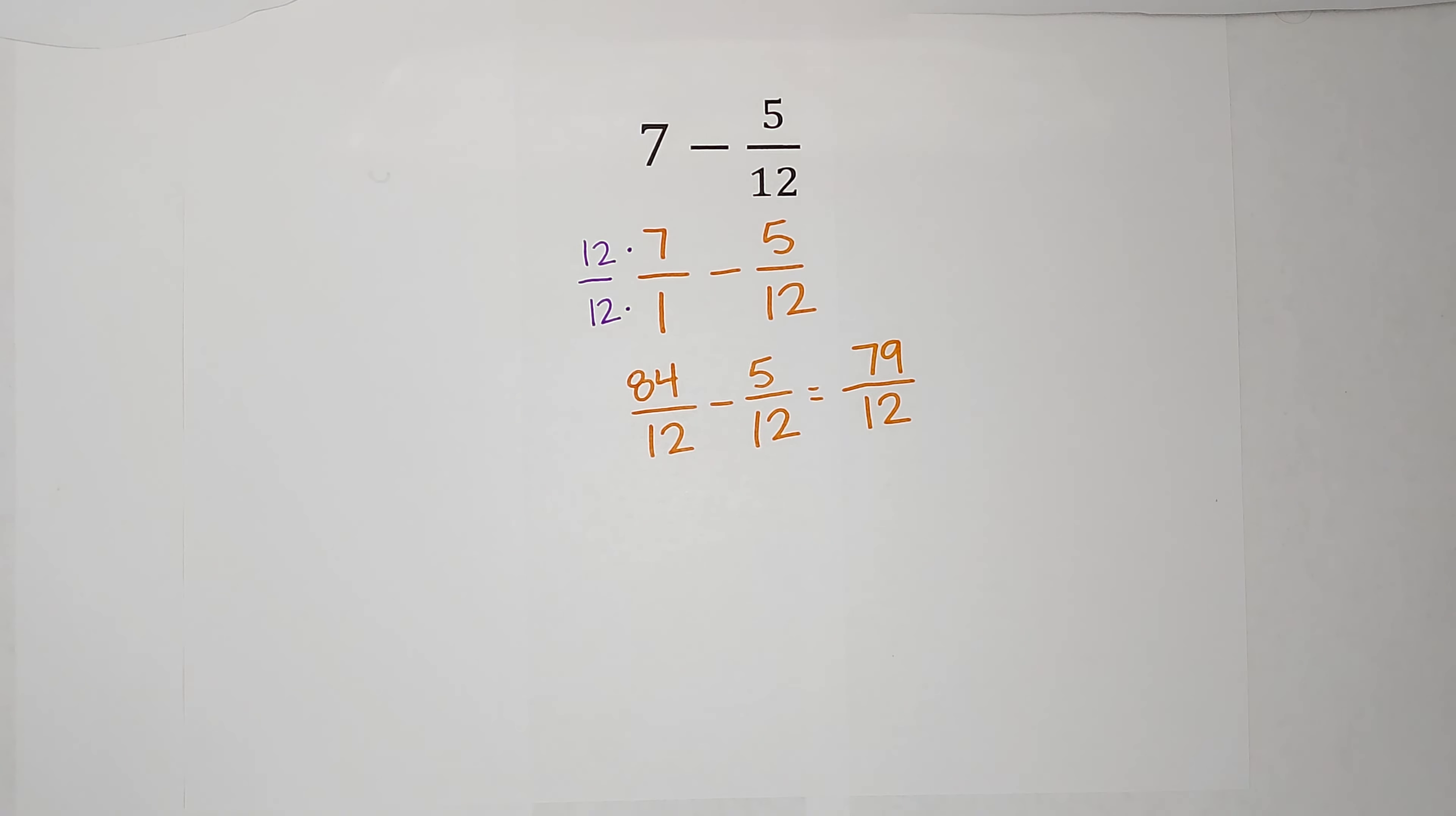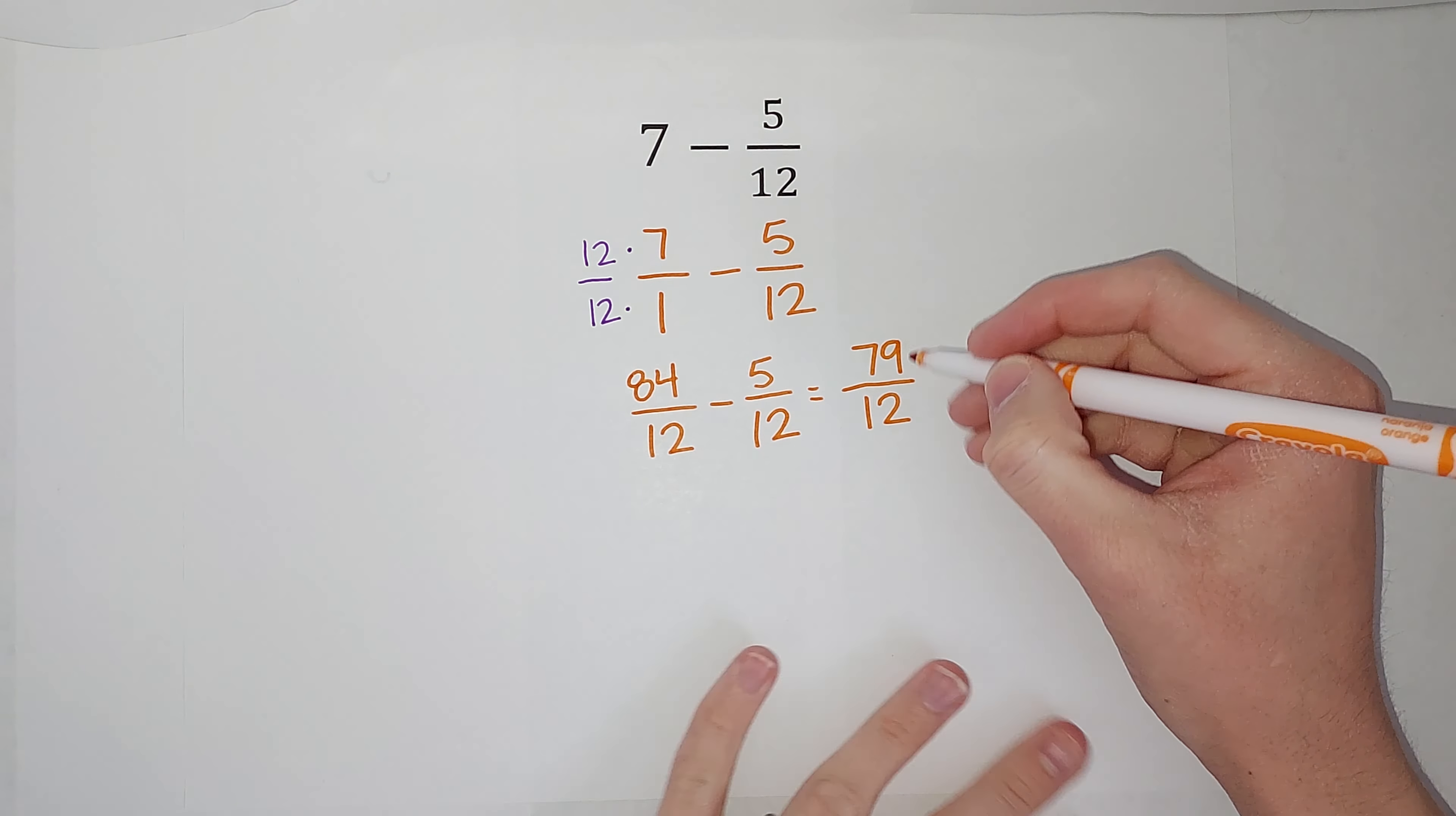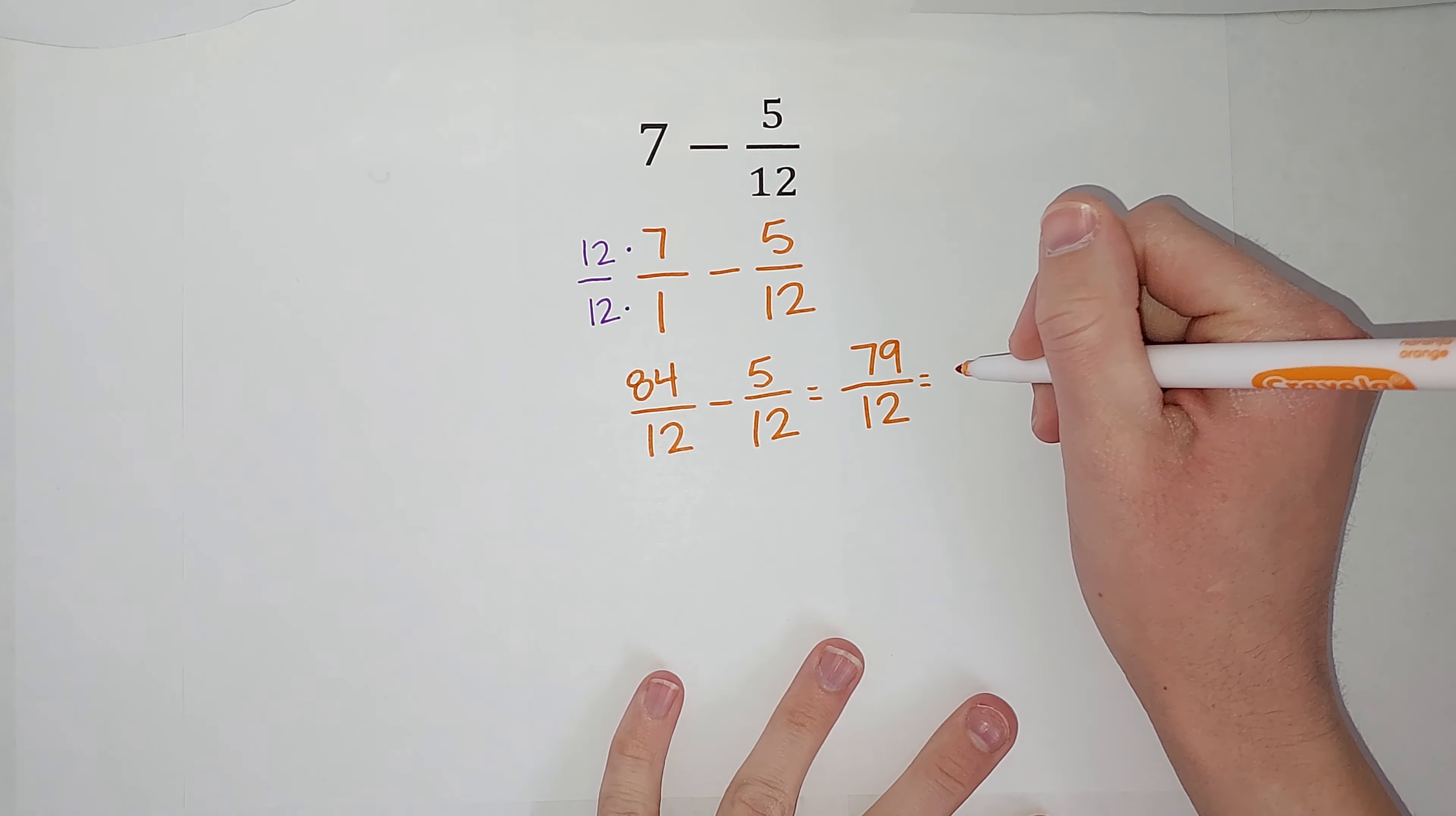Then we like to simplify. Your teacher will probably want it as a mixed number, I would guess. So to change it into a mixed number, if you haven't done this a lot, I'll link a video in the corner that explains it in a little more depth. But we see how many times does 12 go into 79? Well, it goes 6 times, right? Because 6 times 12 is 72.